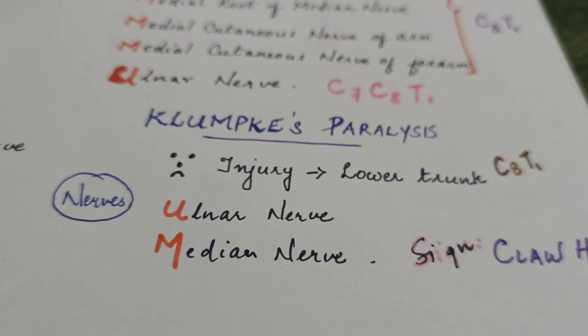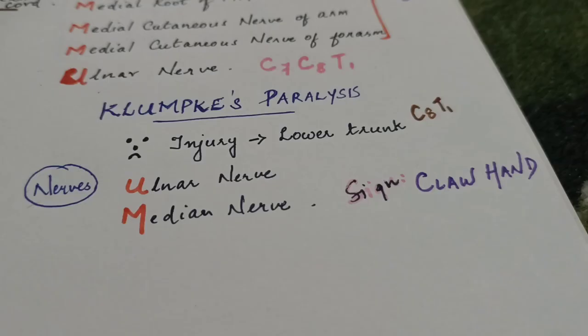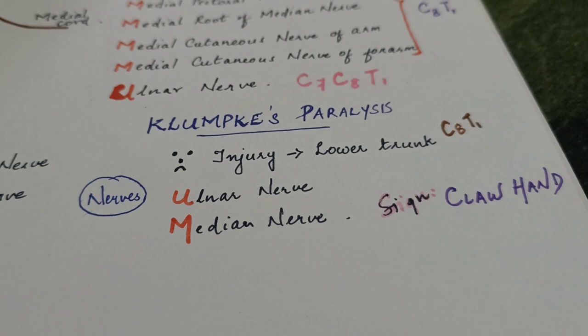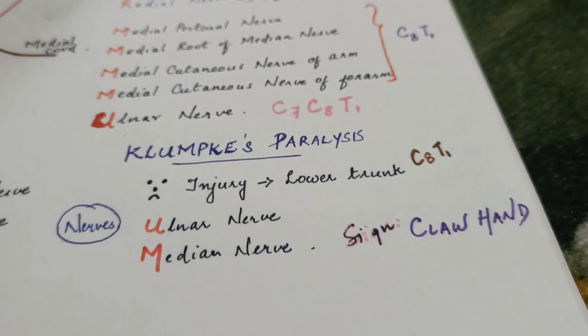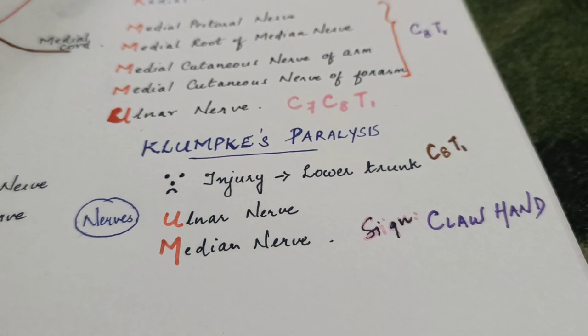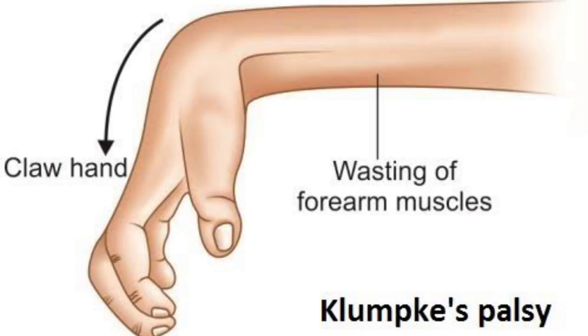Claw hand is characterized by hyperextension at the metacarpophalangeal joint and flexion at the interphalangeal joint. You can see this in the picture — hyperextension at the metacarpophalangeal joint and flexion at the interphalangeal joint.